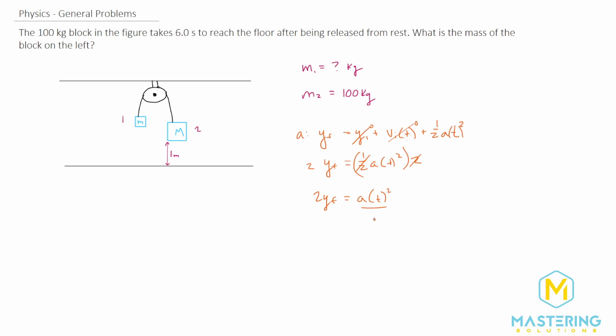So 2 times y final is equal to the acceleration times the time squared. And then we'll divide both sides by t squared. So acceleration is equal to 2 times the y final divided by the time squared. So the acceleration in this case is 2 times a negative 1 meter, and then it's divided by the time, which we said was 6 seconds, and that is squared. So we have 2 divided by 36.